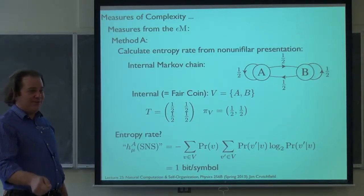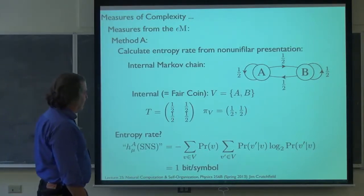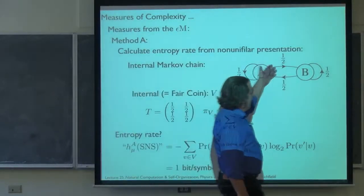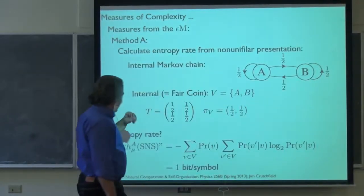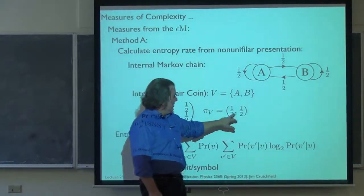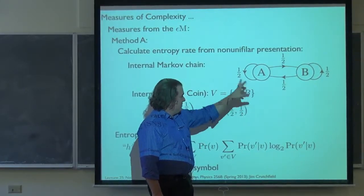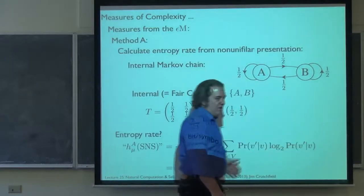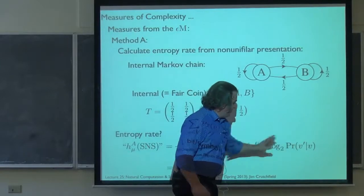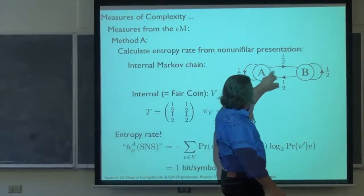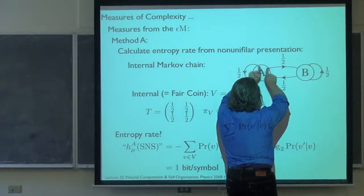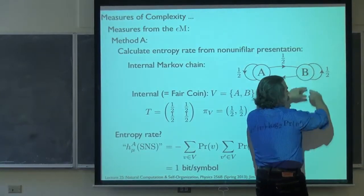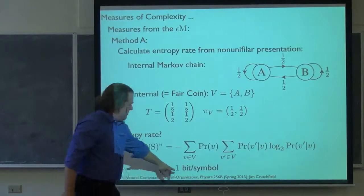First thing: we could just look at the internal Markov chain. That's a fair coin over A's and B's — the Markov chain transition matrix. We calculate the left eigenvector, the asymptotic state probabilities, and naively just take the formula for a Markov chain. We look at the state-average state-to-state transition uncertainty. In each state with probability half, I'm uncertain about going to A or B with 50-50, so my state uncertainty on the transition is one bit. I'm in A with probability half and I get one bit of uncertainty, and in B with probability half I get one bit of uncertainty — so I get one bit per symbol output uncertainty.